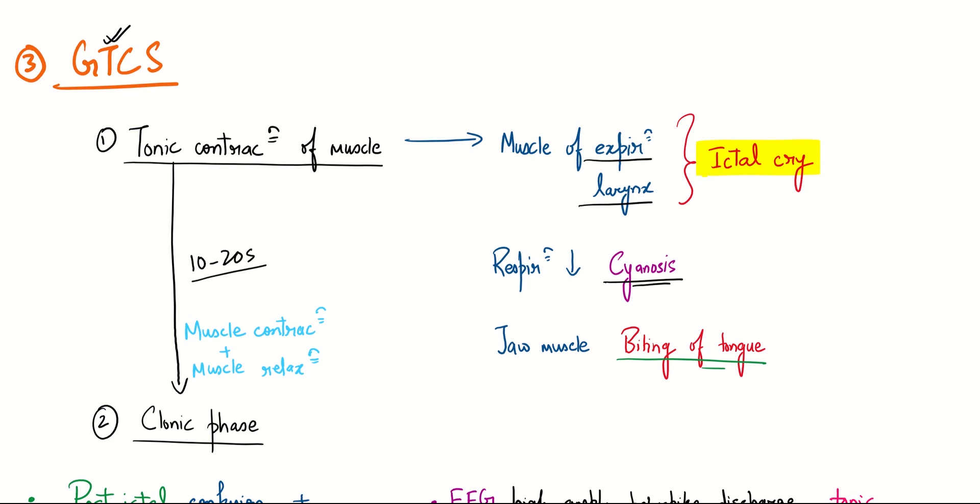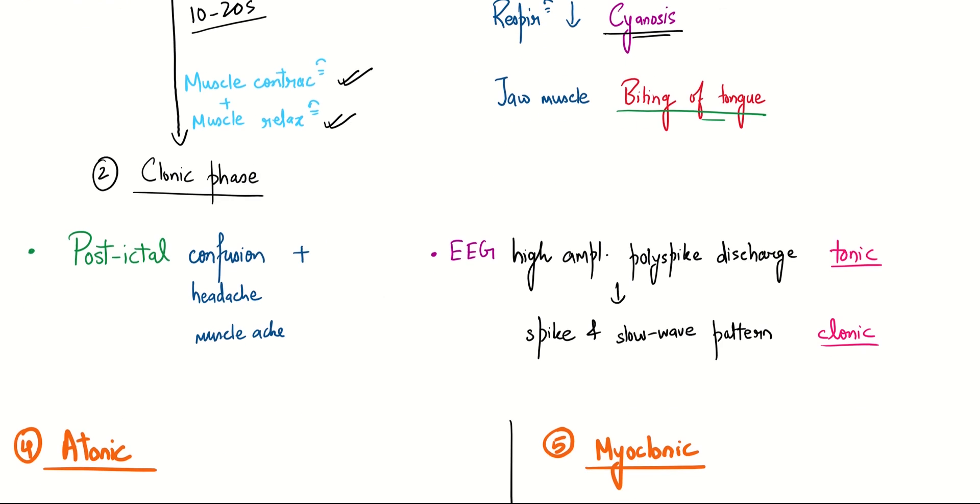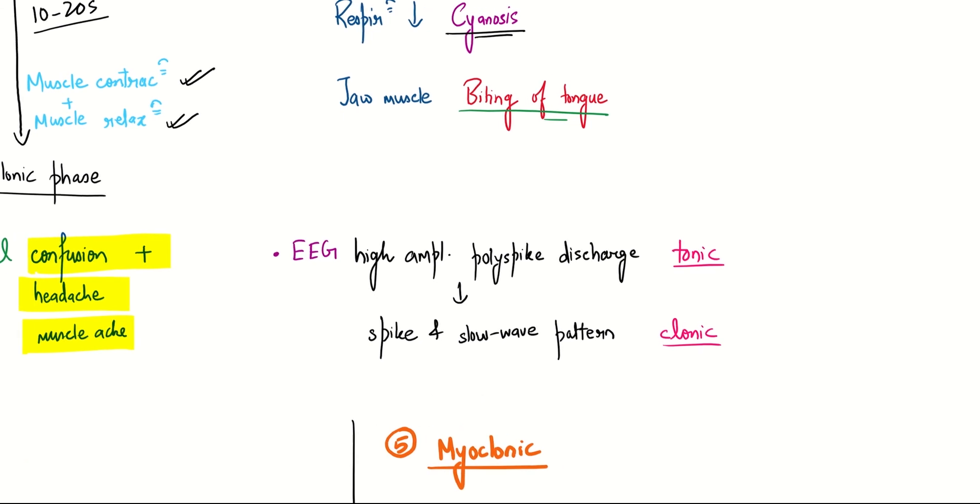In the clonic phase, the muscles will relax, so such a pattern gives rise to the clonic phase. After the seizure has occurred, post-ictally we will see confusion, which is very important to remember for all seizure types. We will also have headache and muscle ache because of the sustained contraction. The EEG will move from high amplitude polyspike discharge during the tonic phase to a spike and slow wave pattern in the clonic phase.